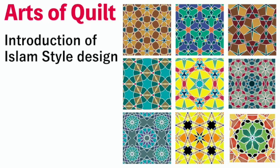Here are 9 types of Islamic style designs of kilt. I will explain the design feature of one type of Islamic style design. And then, we will see how it looks when we change the color of the bordering.